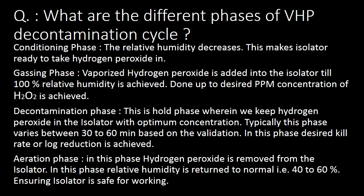The third important phase is the decontamination phase. This is the hold phase wherein hydrogen peroxide is kept in the isolator at optimum concentration. Typically this phase varies between 30 to 60 minutes based on validation. In this phase, the desired kill rate or log reduction is achieved.